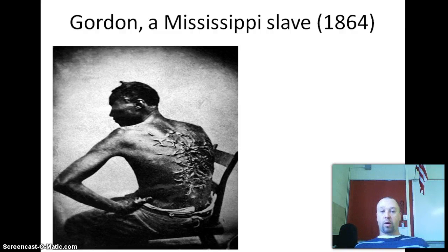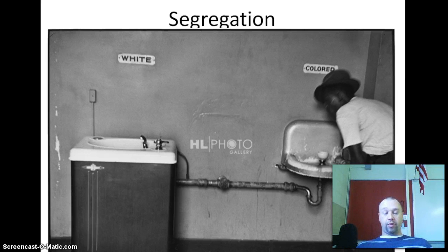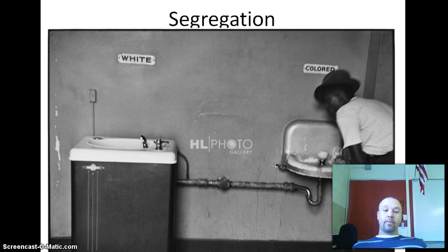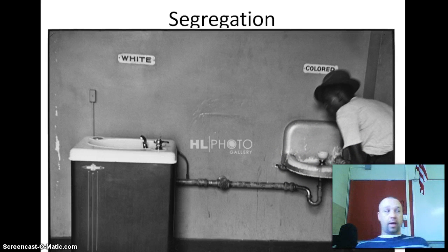That picture we saw before of a Mississippi slave was taken just a year before his freedom. That led to our next period known as segregation, which we're going to spend a lot of time on in class — this will be the next video we watch. Here is a more modern photograph of water fountains: a 'whites only' water fountain, and then the color-designated water fountain for African Americans. Your homework is to write a two-paragraph summary, which will be due tomorrow.